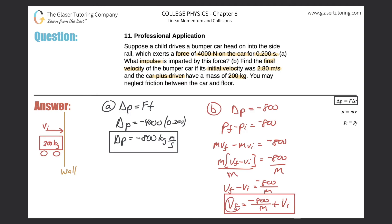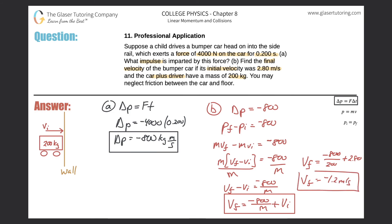More specifically, the final velocity of the car equals negative 800 — that's the impulse — divided by the mass of the car, plus the initial velocity of the car. We know those variables, so let's plug them all in. It's negative 800 over the mass of the car plus the driver, which is 200 kilograms, plus the initial velocity of the car, which is positive 2.80 because I took my initial velocity to be to the right. So we have negative 800 divided by 200, plus 2.8, which gives us negative 1.2 meters per second. That negative just means direction — after the car makes contact with the wall and the force acts for 0.2 seconds, the final velocity of the car will be 1.2 meters per second pointing in the left-hand direction.